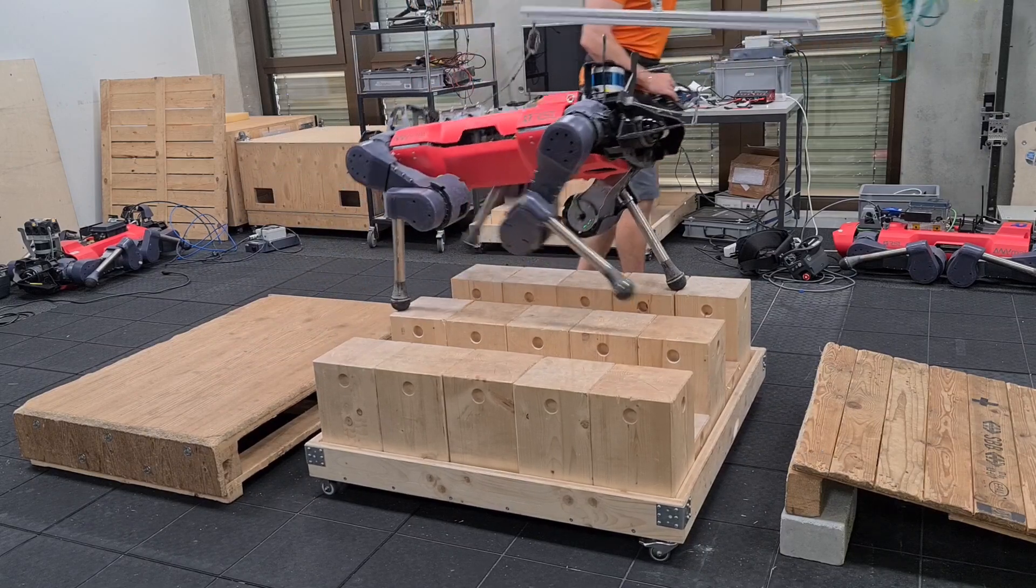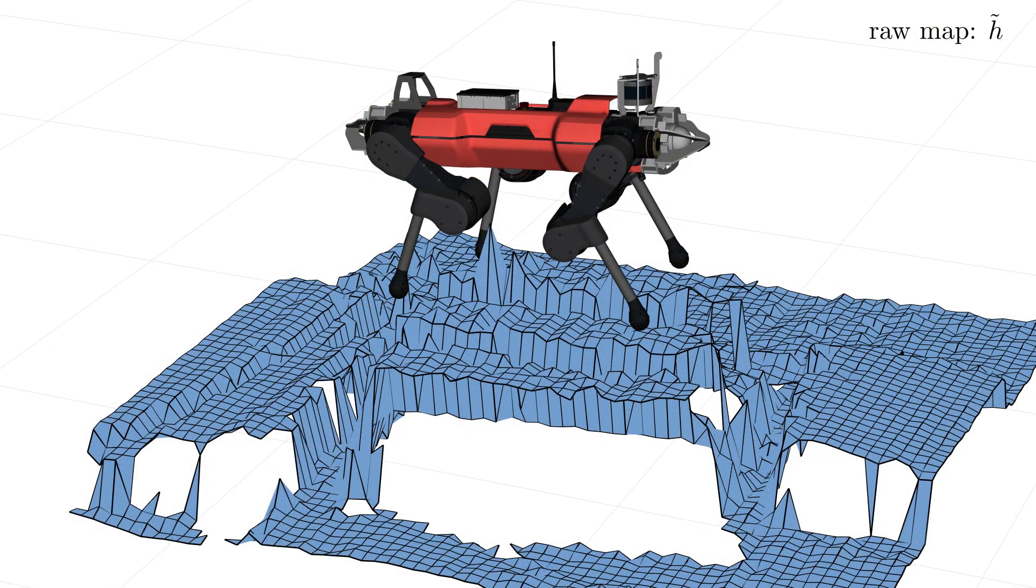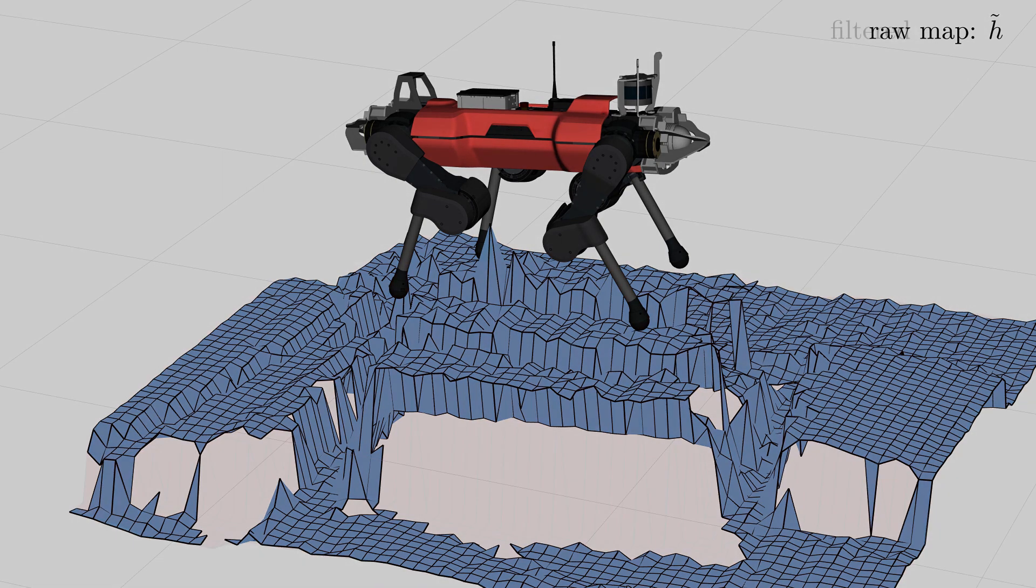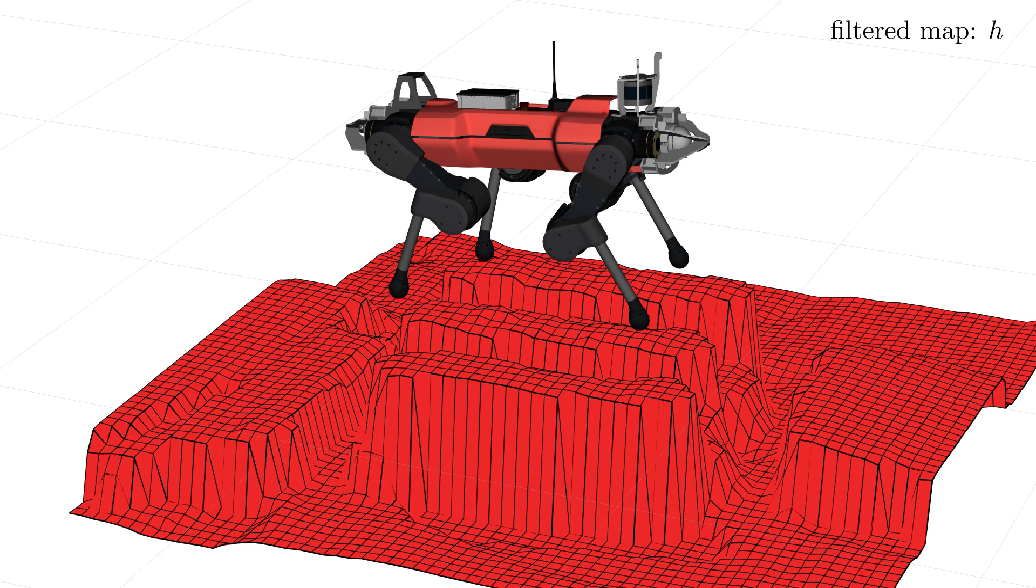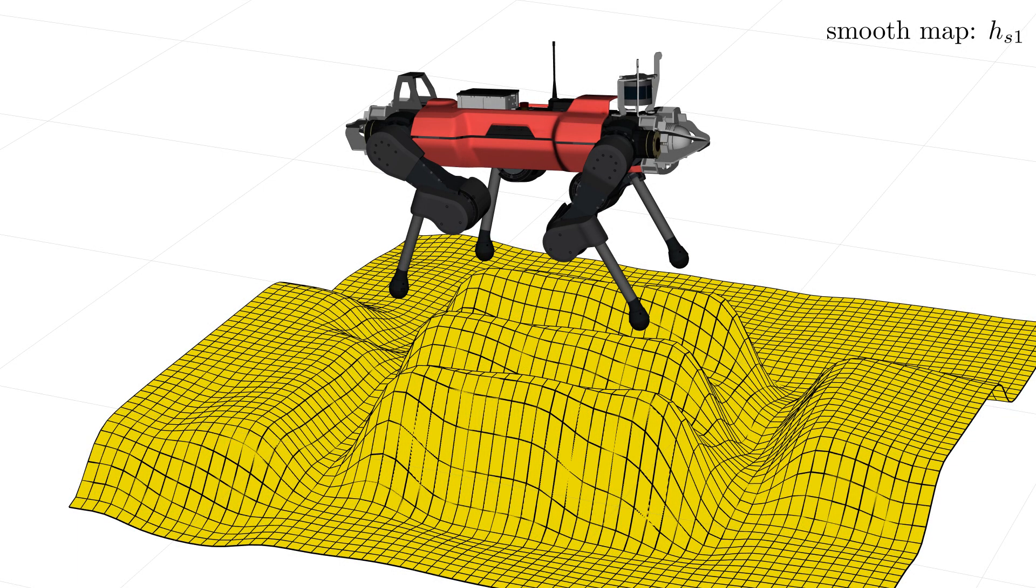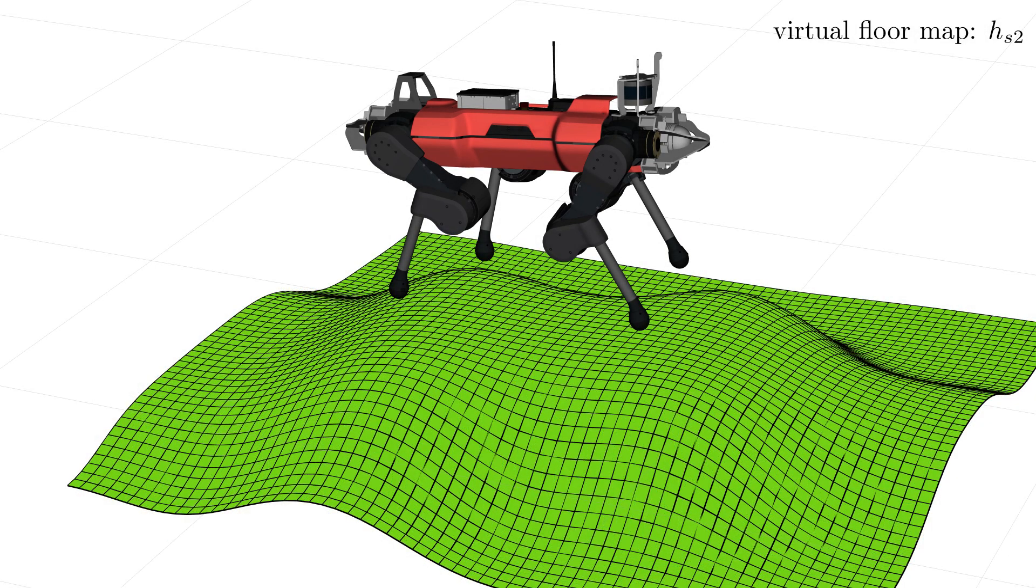Depth measurements, along with proprioceptive sensors, are used to generate a detailed height map, which is processed by an in-painting and outlier rejection filter. Two additional layers are derived from it: a Gaussian smooth map utilized for edge avoidance, and a virtual floor representing a base pose reference.